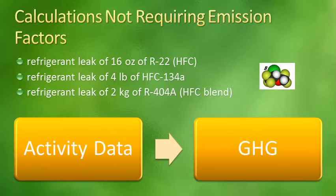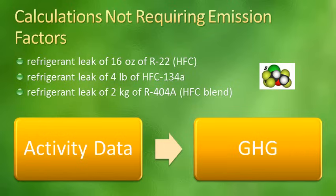A final note regarding GHG calculations and emission factors: there are certain cases where the activity is itself an emission of greenhouse gases. This is most commonly the case with fugitive refrigerant emissions or refrigerant leaks. Some examples are listed here. HFCs are a common refrigerant, and when these are leaked to the atmosphere, they represent an emission of greenhouse gases. However, since the activity data is already in a unit of greenhouse gas, a multiplication by an emission factor is not required.